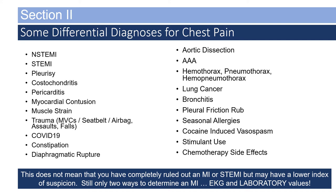This is a differential diagnosis list for chest pain — not all-inclusive, but these are possibilities that should enter the EMS provider's mind on the way to a call, during assessment, and during treatment. Pleurisy, costochondritis, pericarditis, myocardial contusion, muscle strain, trauma, hemothorax, pneumothorax, hemopneumothorax, or tension pneumothorax. This does not mean you've completely ruled out an MI or STEMI, but you may have a lower index of suspicion based on the subjective and objective data obtained on scene.